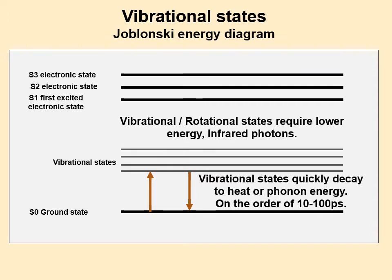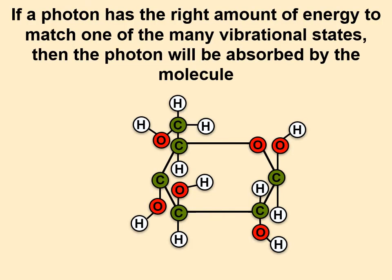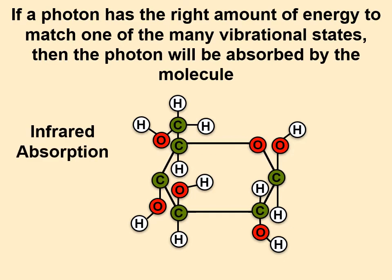If we look at our molecule and send in a photon of the wrong energy — the wrong color — nothing happens. But if a photon has the correct energy or correct color, it's going to get absorbed by the molecule and the molecule will go to that excited vibrational state, then release its energy as a phonon. This is infrared absorption.